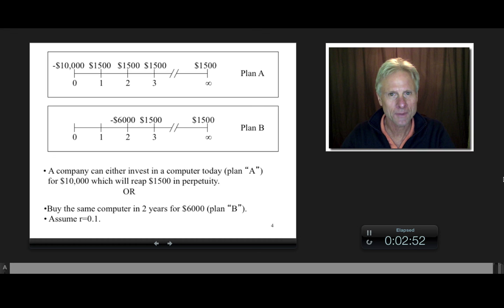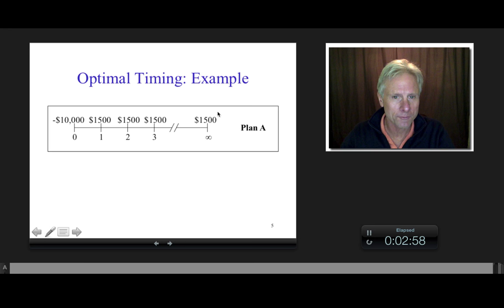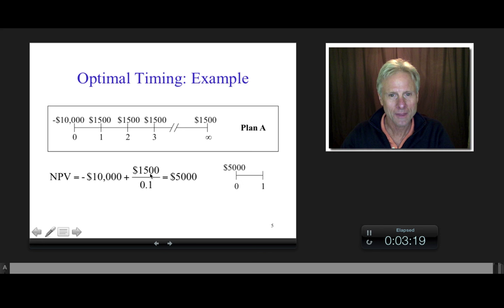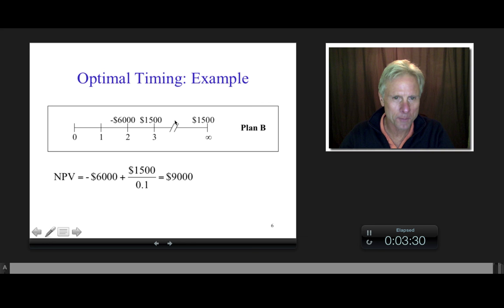So with plan A, if I conduct a net present value, what do I have to do? Do I have to bring all these guys to time 0? I do, right? So here I have the minus 10,000, which is already at time 0, 1,500 over 0.1, so that's a perpetuity. You can look at my time value of money lecture on that if you want, to figure out why that's the formula for a perpetuity. And so basically, all of this comes to 5,000 at time 0. So let's look at plan B. So here I have my minus 6,000, here's my perpetuity formula again, and I get 9,000.